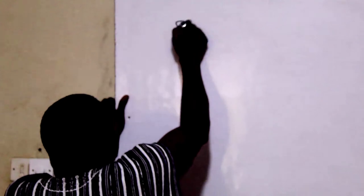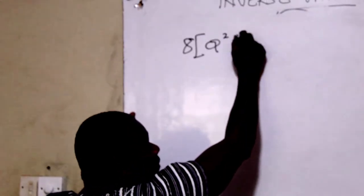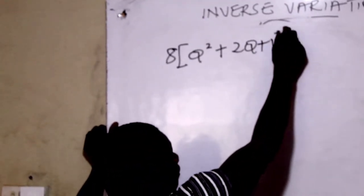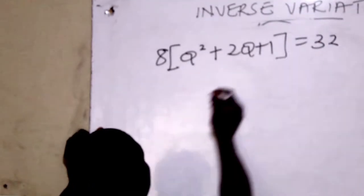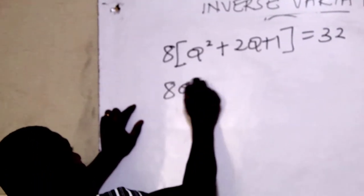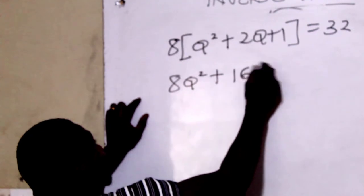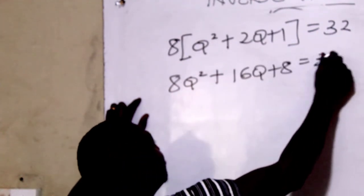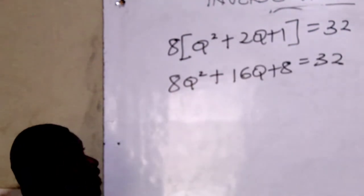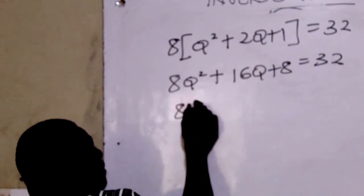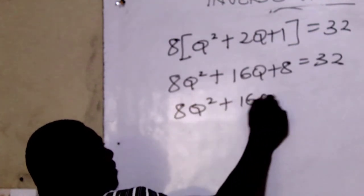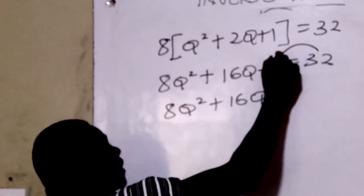So we have 8KL squared plus 16KL plus 8 equals 32. That is what we have here. Now, that is a quadratic expression as you can see. So we bring this 32 in here.